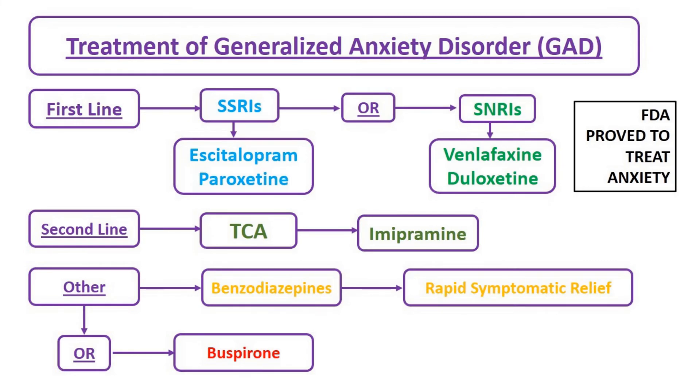Imipramine, escitalopram, venlafaxine, and duloxetine are FDA-approved to treat generalized anxiety disorder.